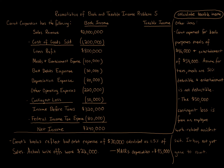Other items include the following. Carrot expensed for book purposes meals of $46,000 and entertainment of $54,000. Assume for taxes, meals are 50% deductible and entertainment is not deductible. The $50,000 contingent loss is from an employee work-related accident suit and it has not yet gone to court. Carrot's books reflect bad debt expense of $30,000 calculated as 1.5% of sales. Actual write-offs were $22,000. MACRS depreciation equals $95,000. Calculate taxable income.